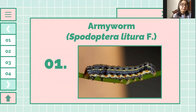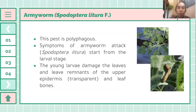Armyworm, or Spodoptera litura F. This species is polyphagous. The symptoms of armyworm attack by Spodoptera litura start from the larva stage. The young larva damages leaves, and the leaves show remnants of the upper epidermis that are transparent, leaving only the leaf veins.